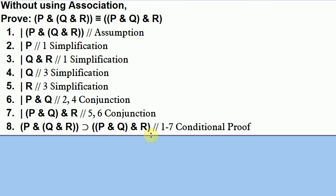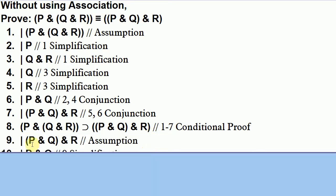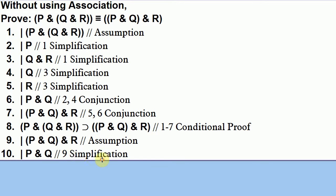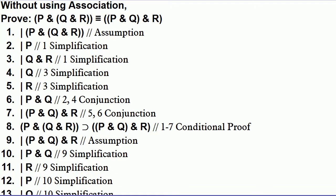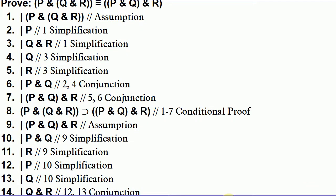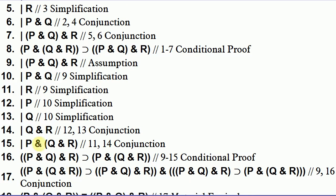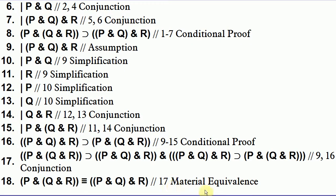Now we do the other conditional proof, starting by assuming (P∧Q)∧R. We simplify to get P∧Q, simplify again to get R, and then simplify P∧Q to get P and Q separately. We conjoin Q and R to get Q∧R, and conjoin again to get P∧(Q∧R). We close off that conditional proof and derive if (P∧Q)∧R then P∧(Q∧R). Then we use conjunction to conjoin both conditionals together.